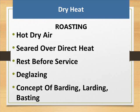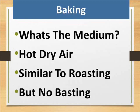Roasting uses hot dry air; food is seared over direct heat and should rest before service. De-glazing is part of the process, along with the concepts of barding, larding, and basting. Baking also uses hot dry air as its medium and is similar to roasting, but without basting.